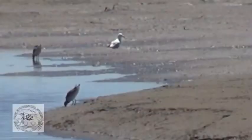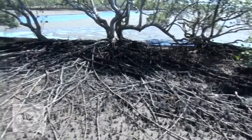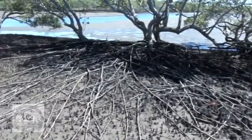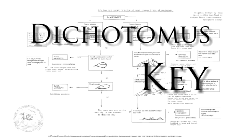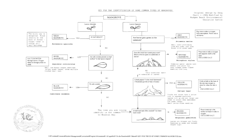Identifying just a few features of a mangrove will allow you to use the dichotomous key to find their identity. In Southern Queensland there are only seven mangroves.